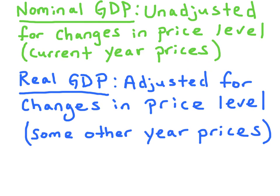Real GDP adjusts the nominal GDP for changes in price level. So real GDP represents the output in some other year's prices. This is very useful for measuring the overall growth of goods and services in an economy.